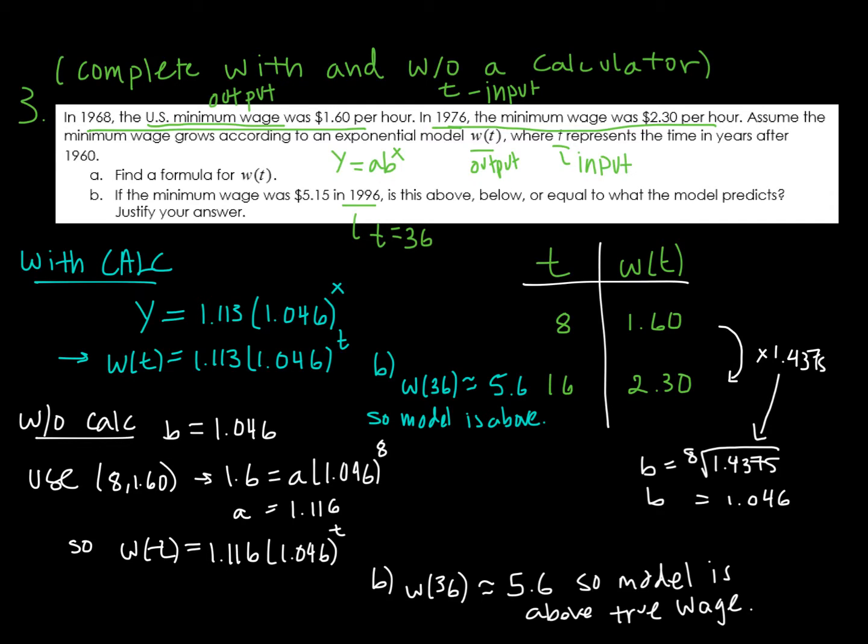If I'm doing this without a calculator, I'm looking at the multiplicative rate of change here. So I need to multiply 1.6 by 1.4375 to get 2.3. And this occurs over a change in 8 in the number of years. So what I'm looking for is something I can multiply by itself 8 times that will be the same as multiplying by 1.4375 once. In other words, I'm taking the 8th root of 1.4375. So doing so, taking 1.4375 and raising it to the 1/8th power gets me 1.046, the same base that I had from my calculator.